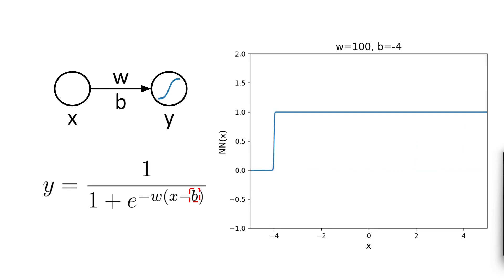Let's say that we set w equal to 100. Now we can play with the value of b, and if we do that, we can see that its role is to shift the place where the step happens.